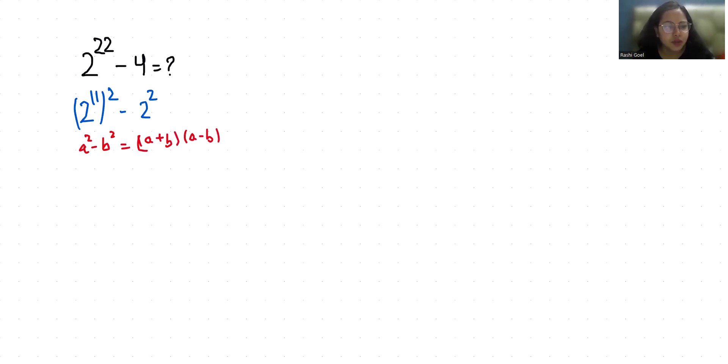This becomes (2^11 + 2)(2^11 - 2). So 2^10 we know is 1024. So 2^11 is 2 times 1024 which equals 2048.